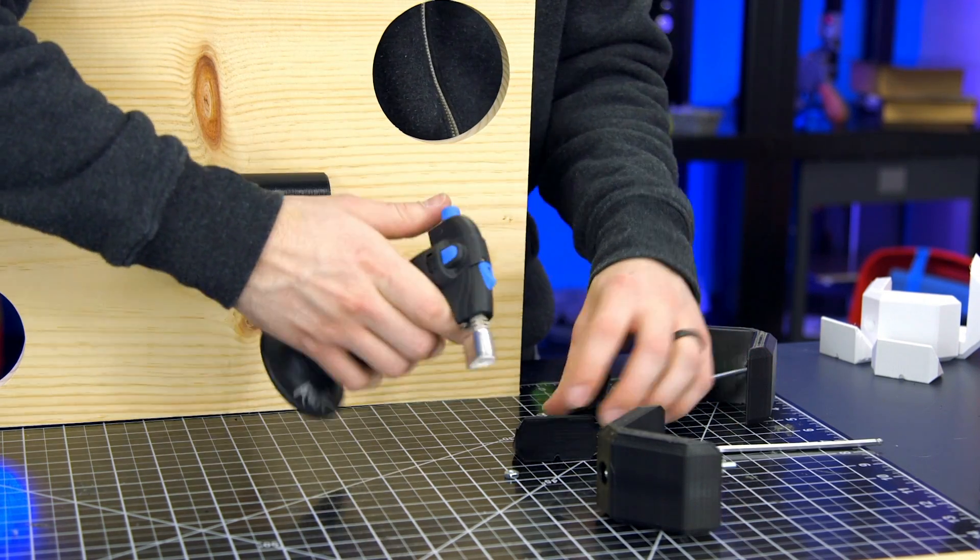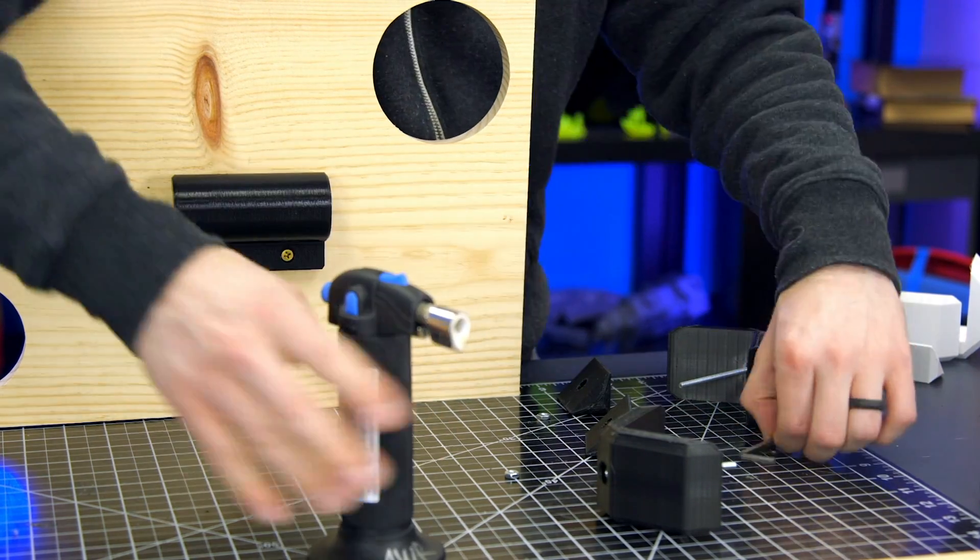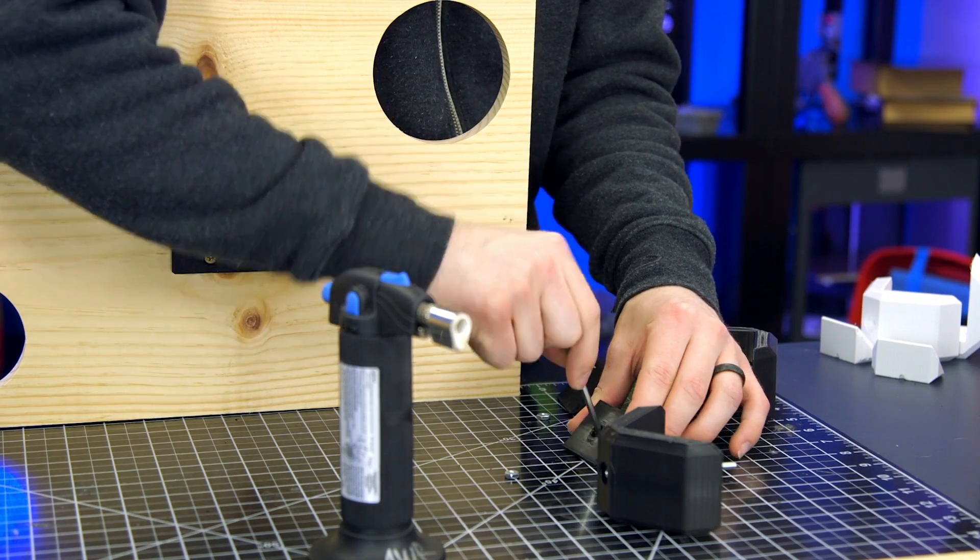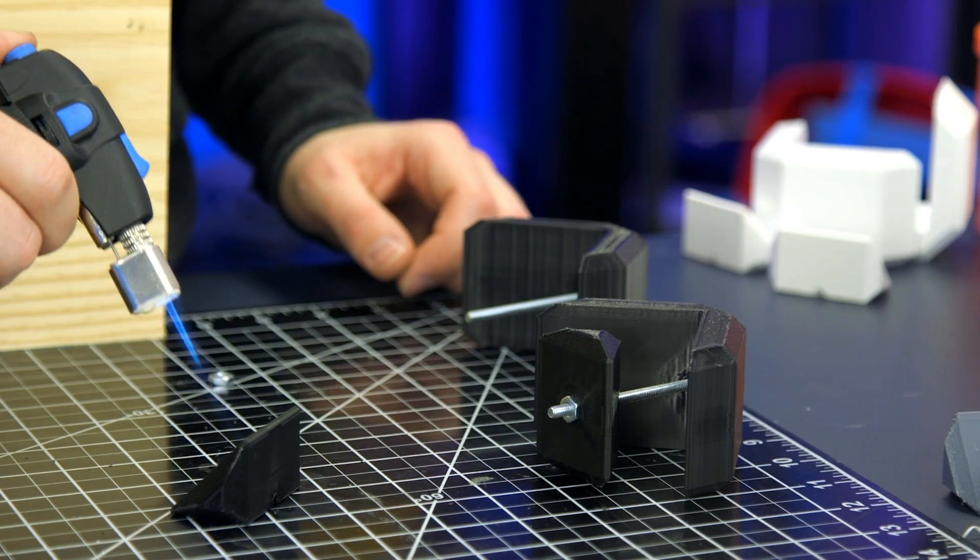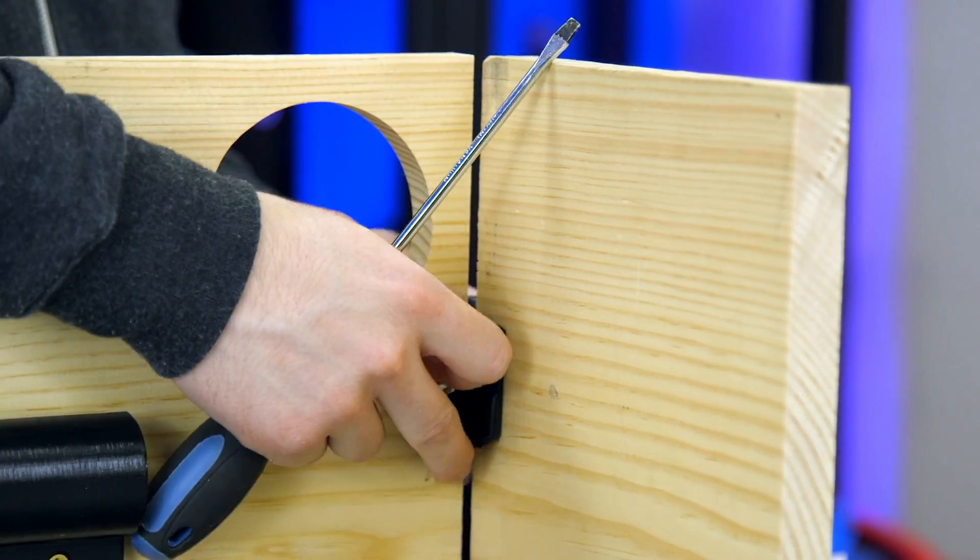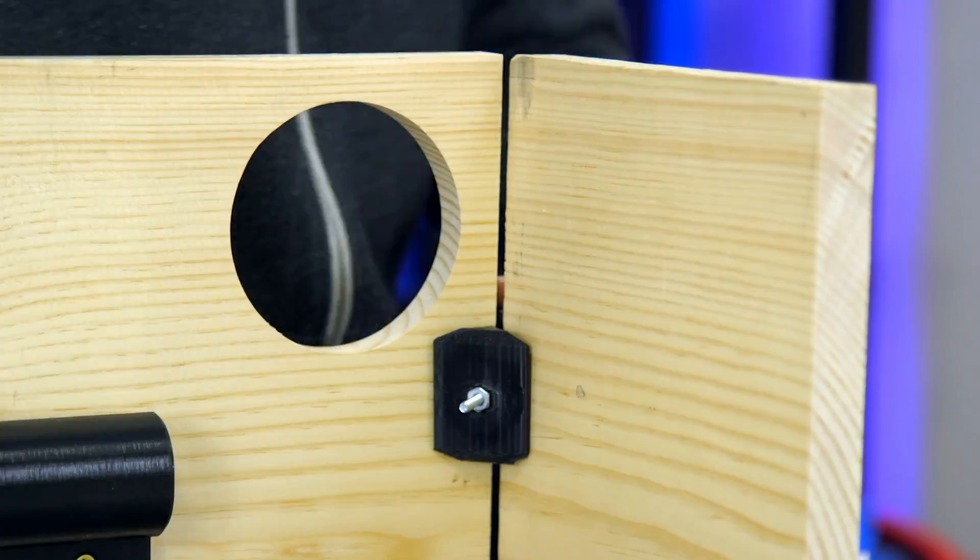Now the holes I made in the clamps are actually a little too small for the screws I was using. I could go back, remodel them and reprint, but it's a lot easier just to melt the parts a bit and jam an Allen key in there and twist it to get the right shape. From there I just had to tighten them up against the boards and let them do their thing, and there we go.